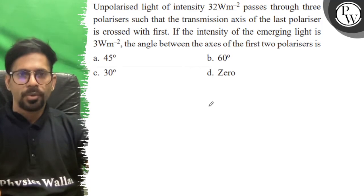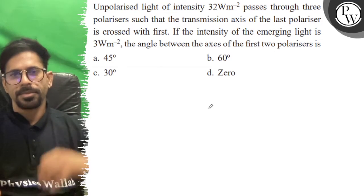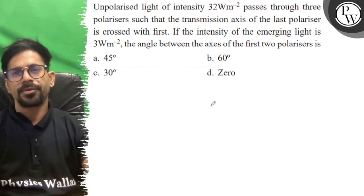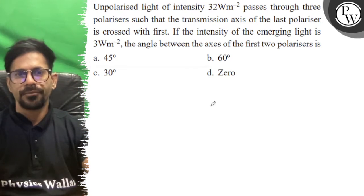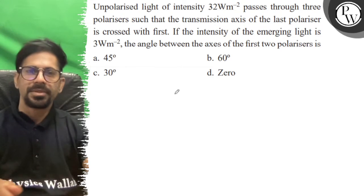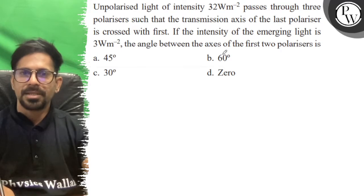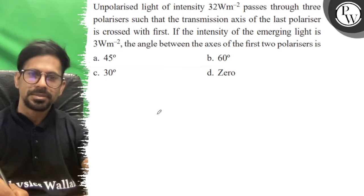Hello, let's see the question. Unpolarized light of intensity 32 Watt per meter square passes through three polarizers such that the transmission axis of the last polarizer is crossed with the first. If the intensity of emerging light is 3 Watt per meter square, the angle between the axes of the first two polarizers is.